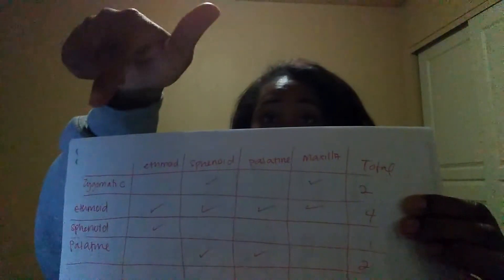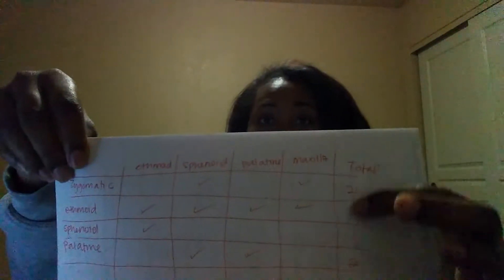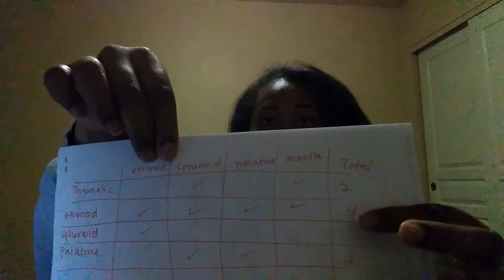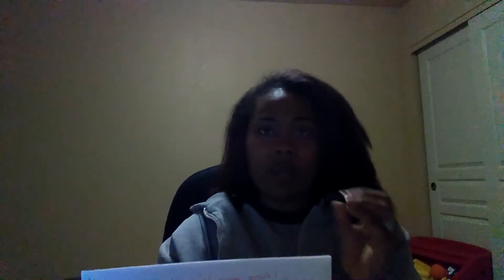It looks something like this — I would list all of the names of the bones here, list them again up here, and if that bone joined with that bone above, I'd put a check mark, and just keep going all across. By the way, this is not correct — I'm just using an example. At the end I would total that, so for the zygomatic bone it would be two articulations, four for the next one. In my head I'd think: which bones have two articulations? Zygomatic, and so on — that's the way I broke it down.